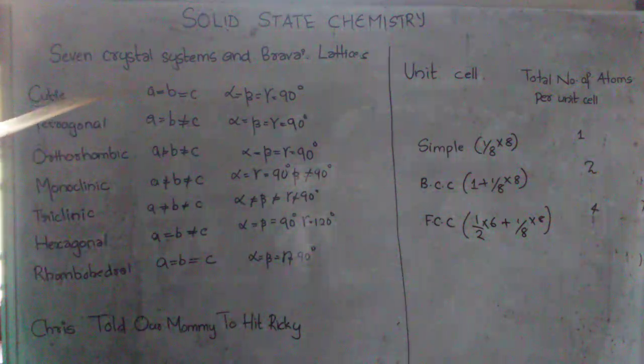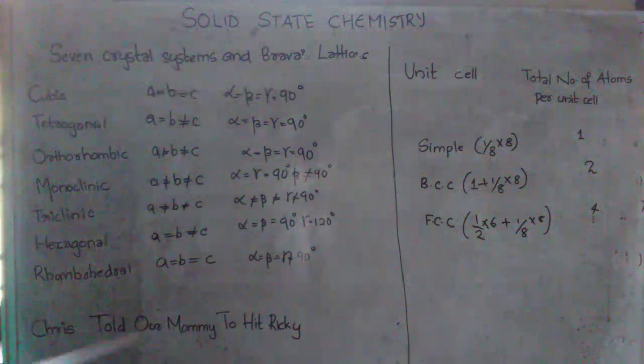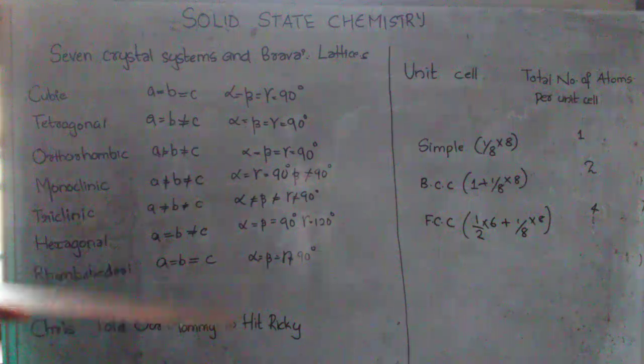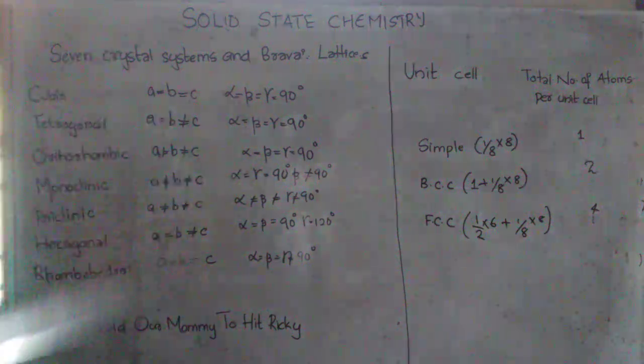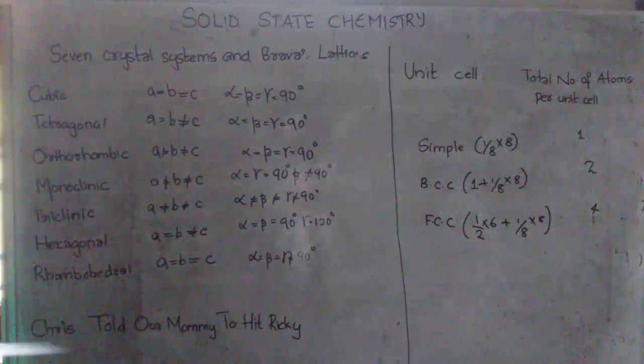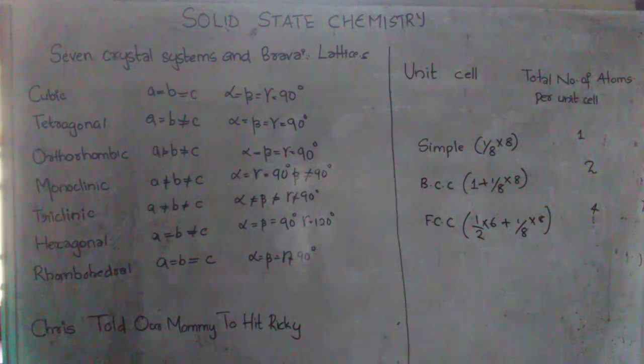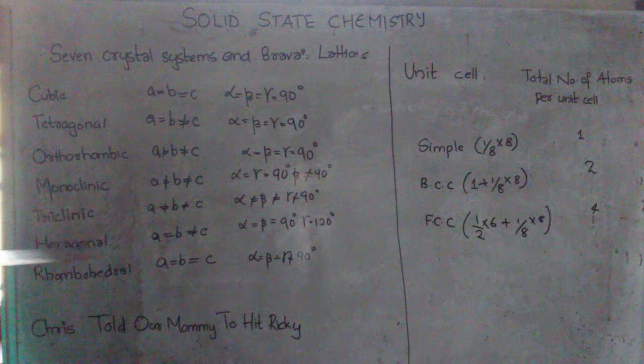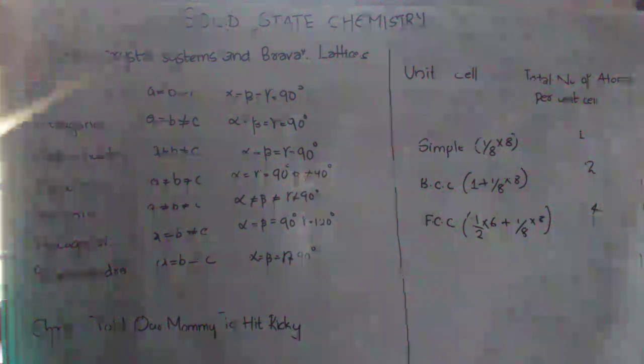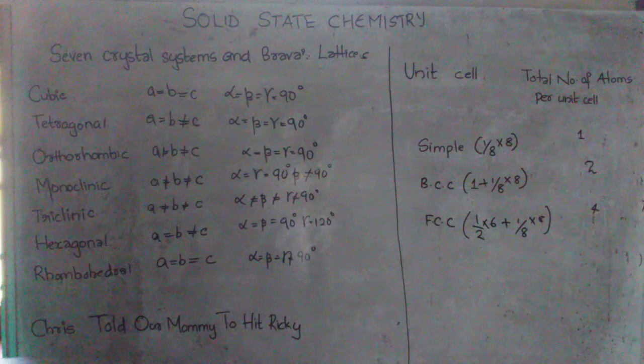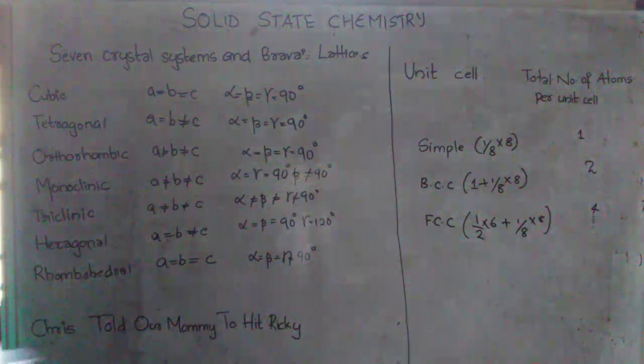So here usually this table is very difficult to memorize. So I am giving you a shortcut to just memorize this table. That is first we need to remember this: cubic, tetragonal, orthorhombic, monoclinic, triclinic, hexagonal and rhombohedral. That is the crystal system in this order. With this sentence we can do that: Chris told our mommy to hit Ricky. So Chris the C stands for cubic, told the T for tetragonal and so on.